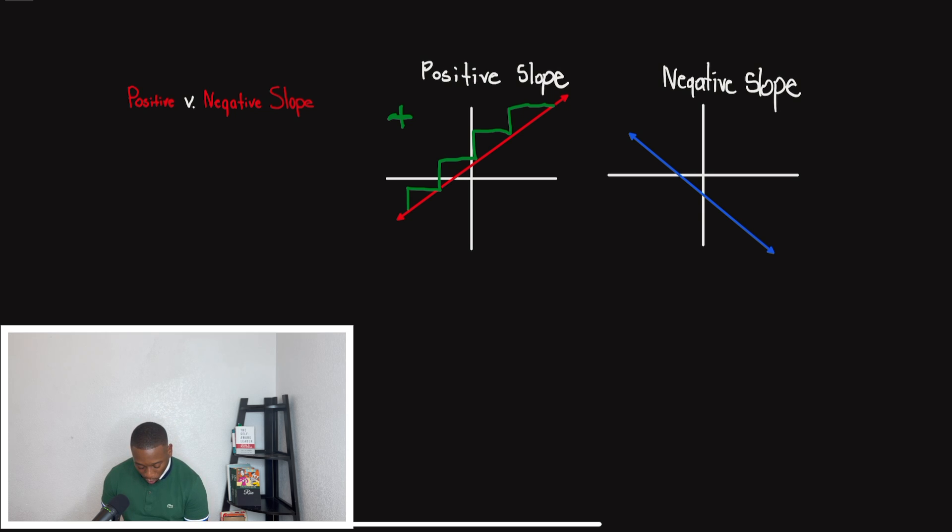And if we go to our second graph, once we follow that line from left to right, we notice that we're going down the stairs or down the hill. So this would be a negative slope. And it doesn't matter where on the graph it is, whether it's in quadrant one, two, three, or four. Based on how the line is slanted upward or downward is what lets us know if it's a positive or negative slope.